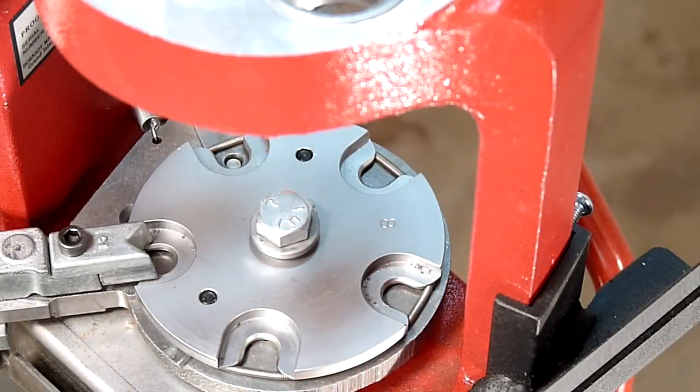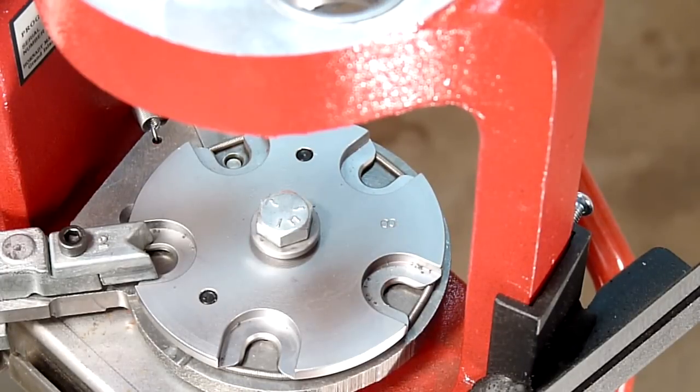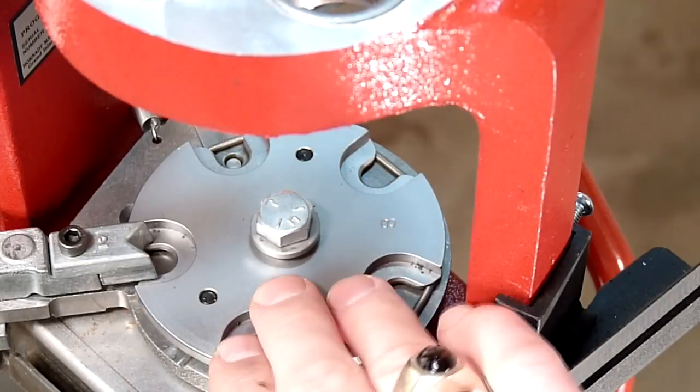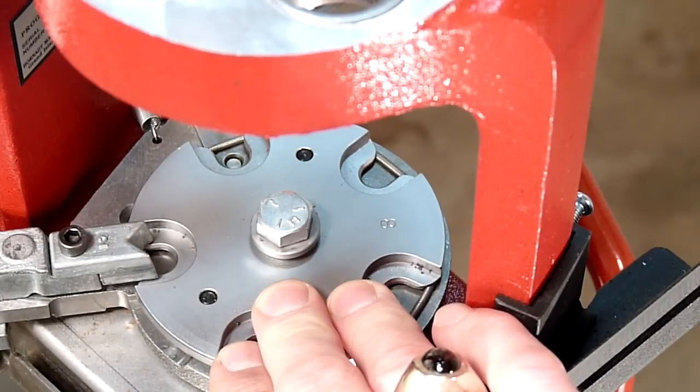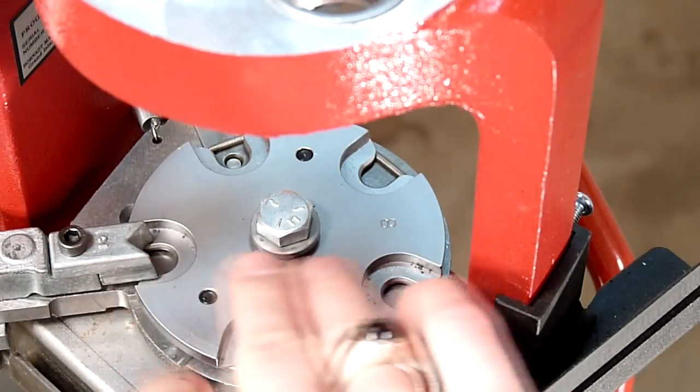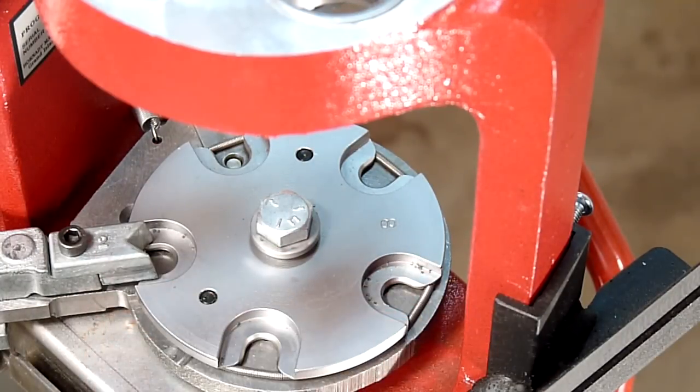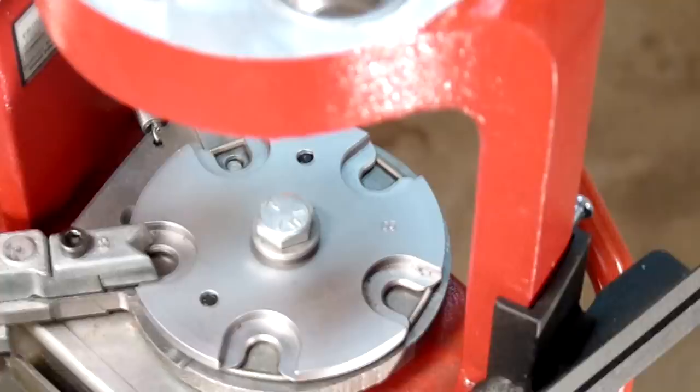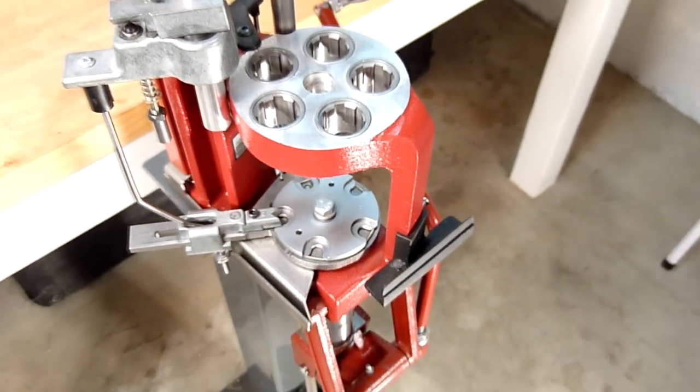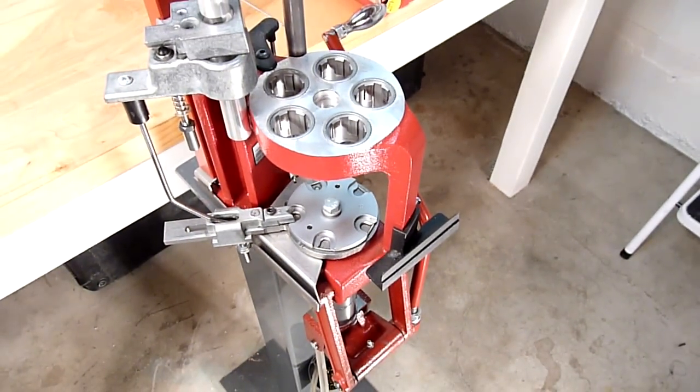To load 9mm ammunition on the Hornady Lock and Load AP Progressive Press, you're going to need a number 8 shell plate. We've already installed that shell plate on the press, and you can see here that we don't have an ejector wire, so we're using the newer EasyJect system. We're going to take that as our starting point, and next we'll install the dies.